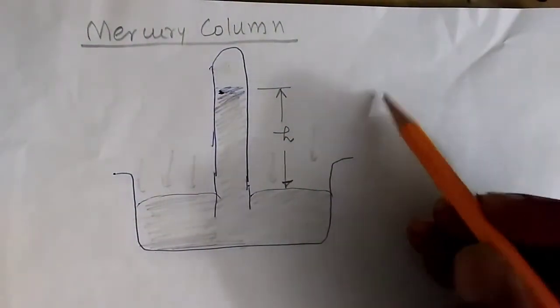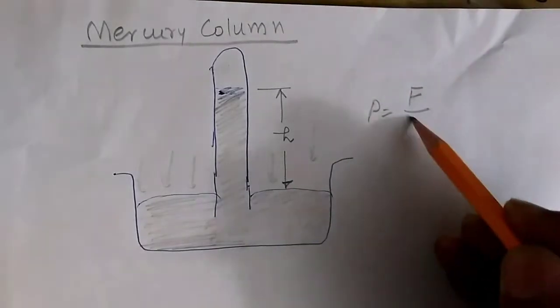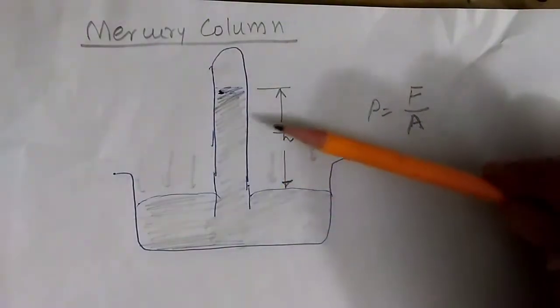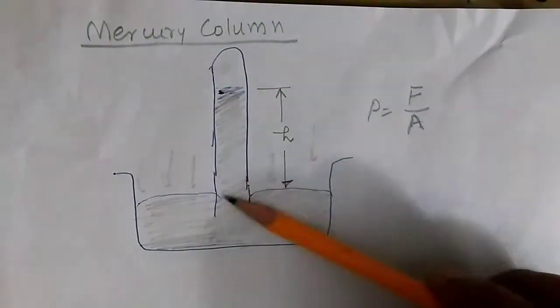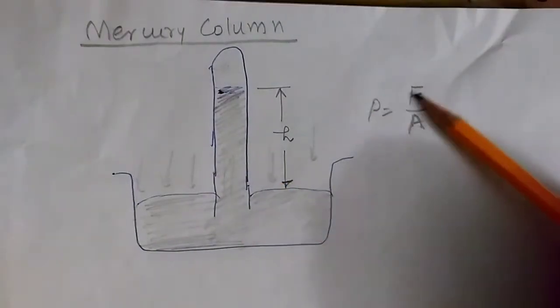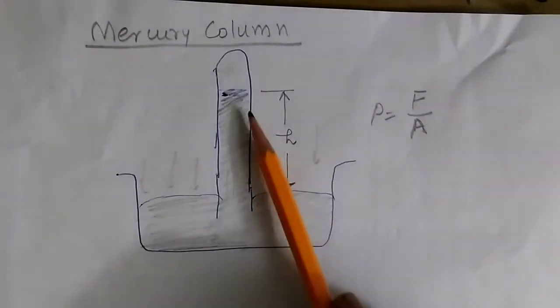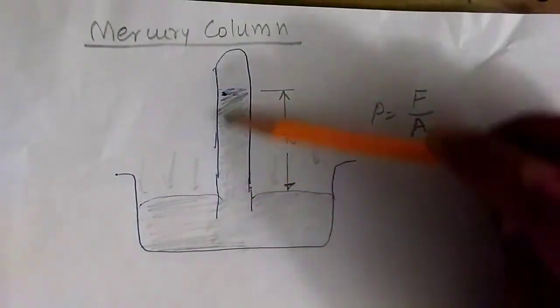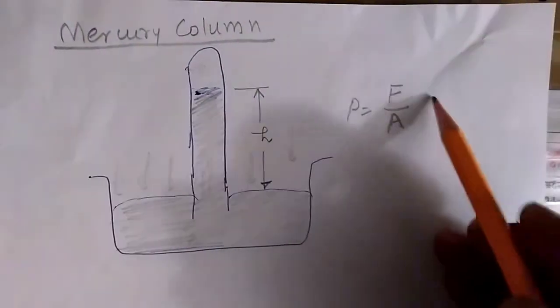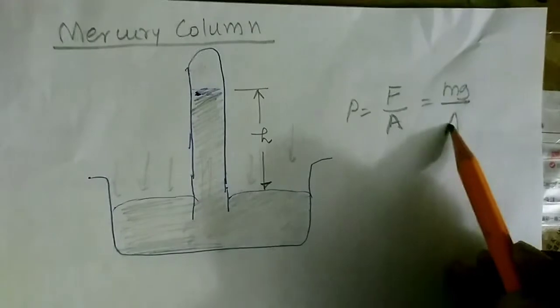The pressure is given by P equals force divided by area. There is a force on this mercury column acting like this. This pressure is F upon A. And this atmospheric pressure which is pushing upside is balanced by the weight of the mercury column between this height and this height. This force will be given by F equals the gravitational force Mg divided by A.